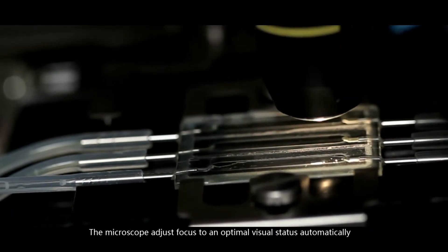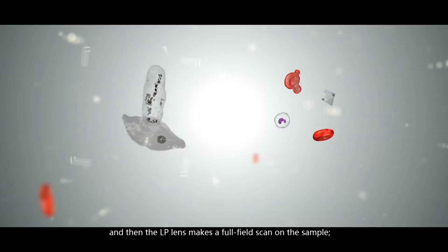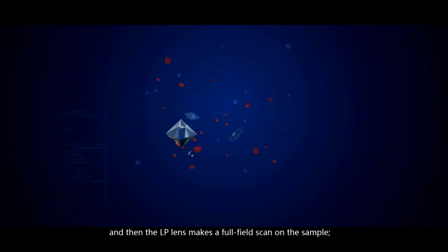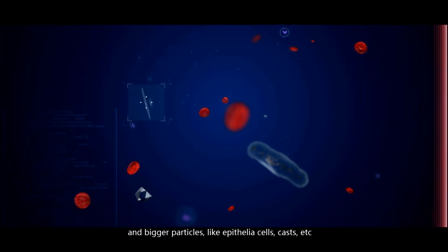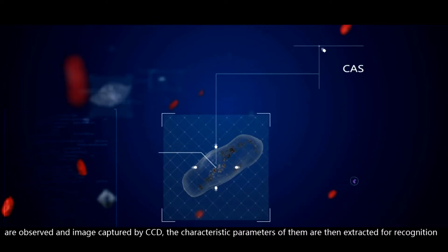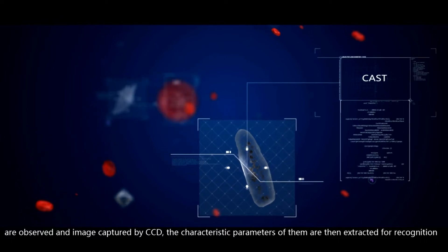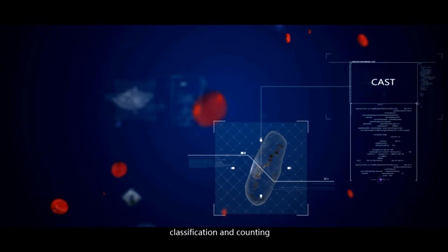The microscope adjusts focus to an optimal visual status automatically, and then the LP lens makes a full field scan on the sample, and bigger particles like epithelial cells, casts, etc., are observed and image captured by CCD. The characteristic parameters of them are then extracted for recognition, classification, and counting.